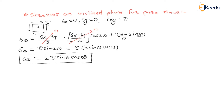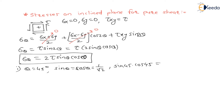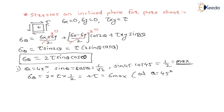We now find the maximum and minimum values of sigma_theta. When theta = 45°, sin45° = cos45° = 1/√2, so sinθ*cosθ = 1/2, which is the maximum product. Therefore sigma_theta = 2*tau*(1/2) = +tau. This is the maximum value of sigma_theta, sigma_max = +tau, at theta = 45°.